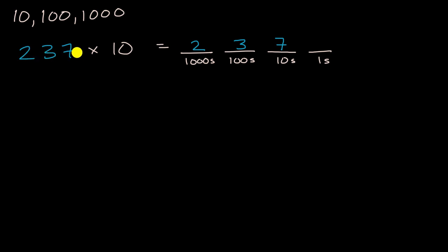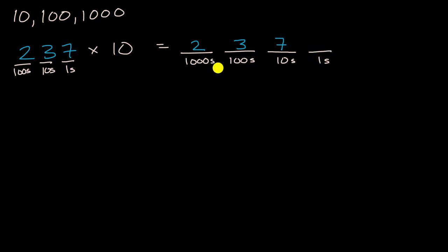So what just happened? All of my digits shifted one place to the left. What used to be in the ones place is now in the tens place. What used to be in the tens place is now in the hundreds place. And what used to be in the hundreds place is now in the thousands place. We have no ones in this product, so we put a zero there. So 237 times 10 is 2,370. When I multiplied by 10, I shifted all my digits one place to the left.